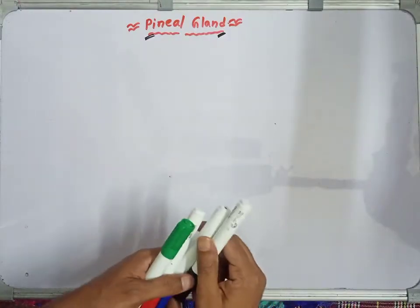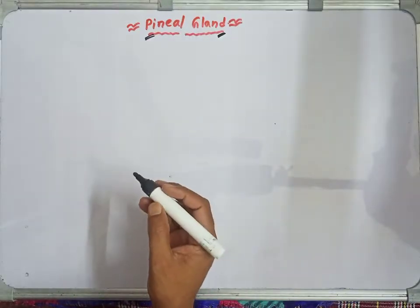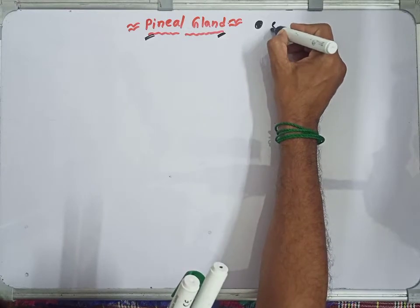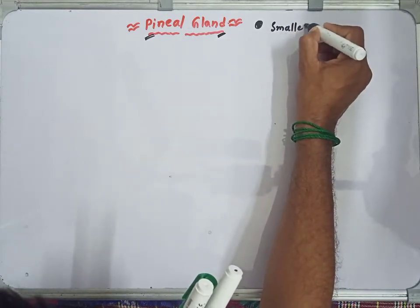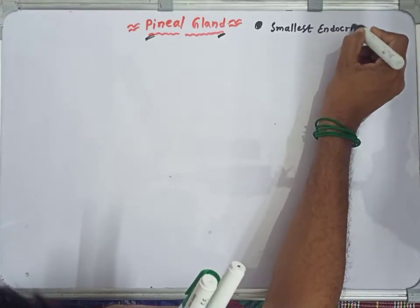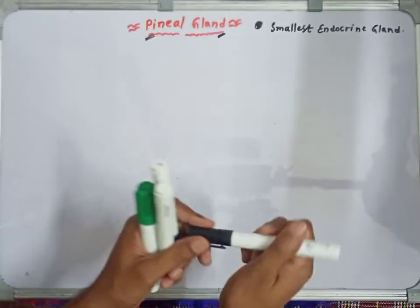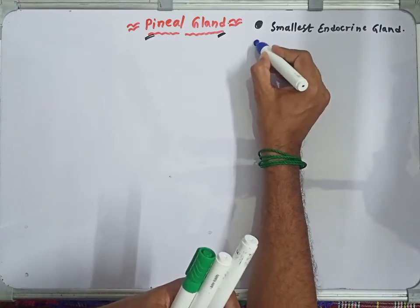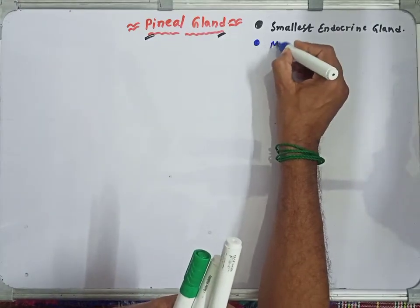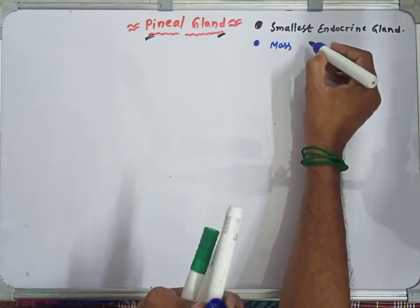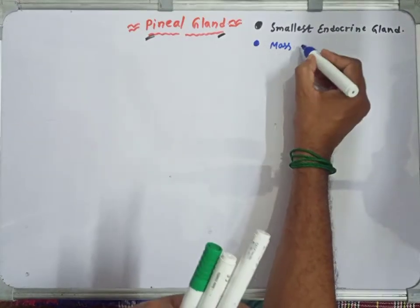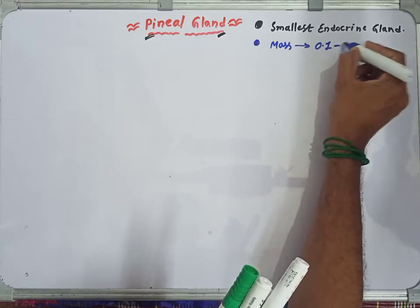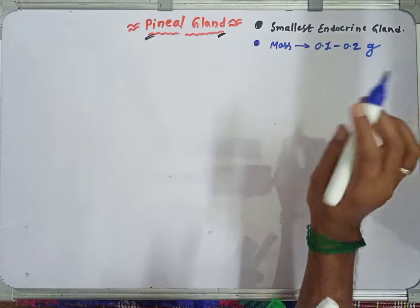Today we'll discuss the pineal gland. The pineal gland is one of the endocrine glands present in the human body. It is actually called the smallest endocrine gland — that is a very important point. The smallest endocrine gland is the pineal gland. Its mass is only 0.1 to 0.2 grams, so think about how small it is.